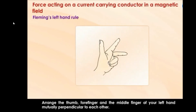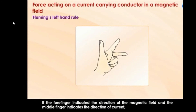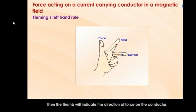Let us learn Fleming's left hand rule. Arrange the thumb, forefinger and middle finger of your left hand mutually perpendicular to each other. If the forefinger indicates the direction of the magnetic field and the middle finger indicates the direction of the current, then the thumb finger will indicate the direction of force on the conductor.